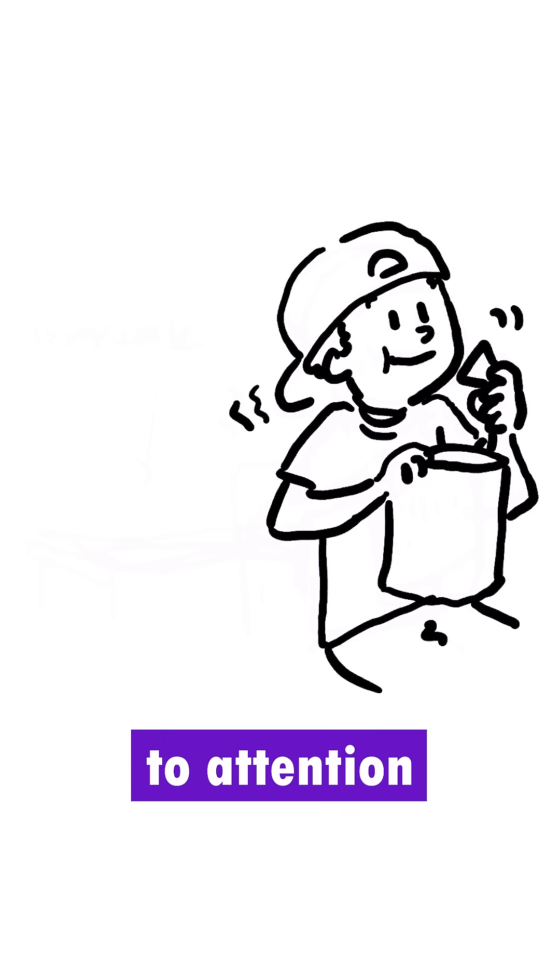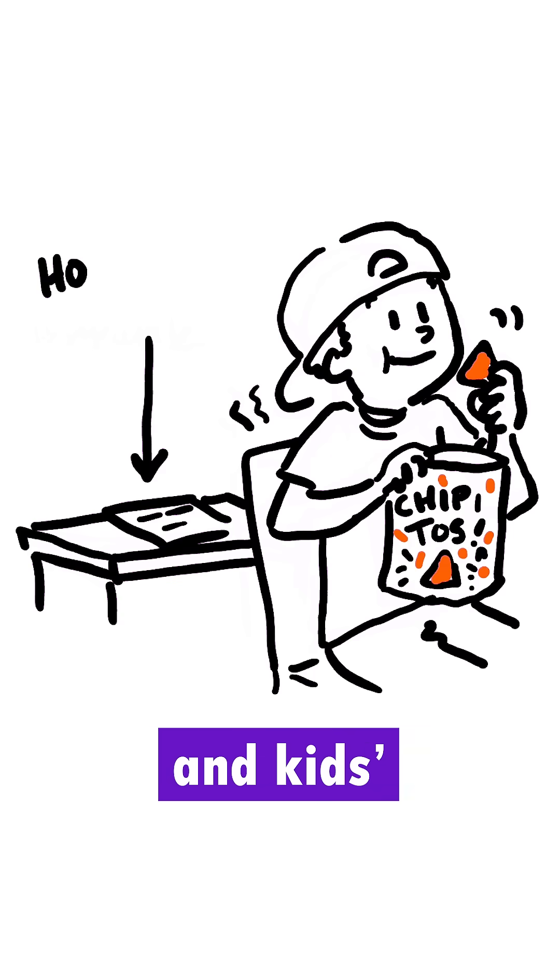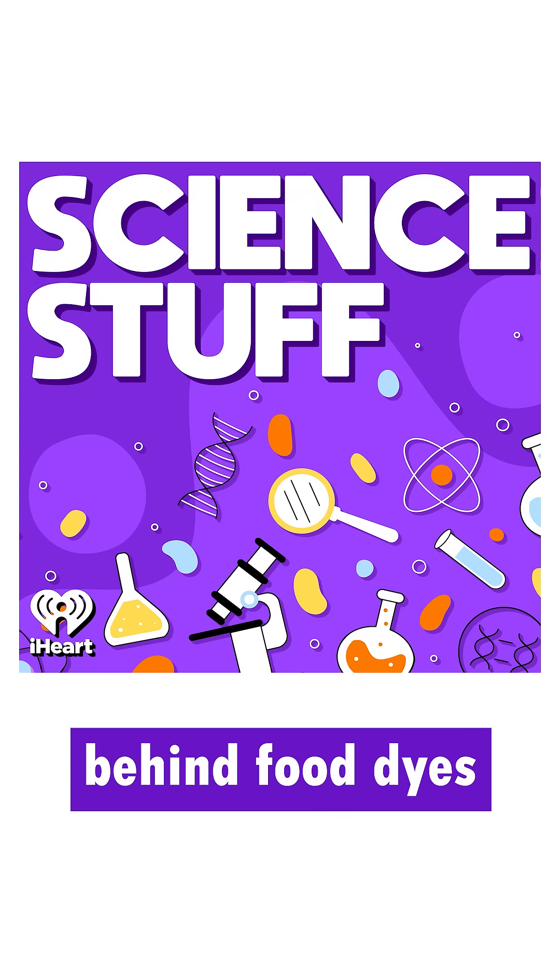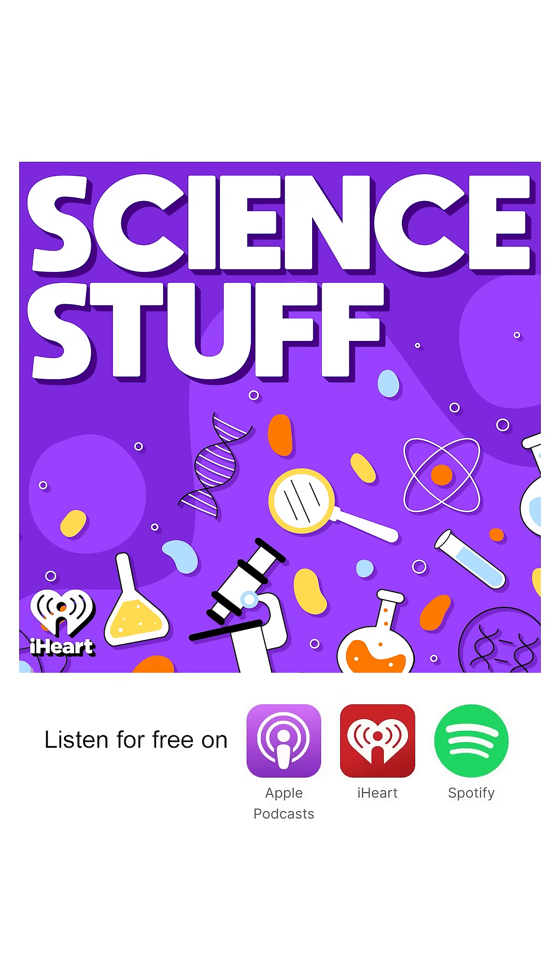Artificial food dyes have also been linked to attention deficit problems and kids' ability to stay focused. Learn more about why we color our foods and the science behind food dyes in the new podcast, Science Stuff.